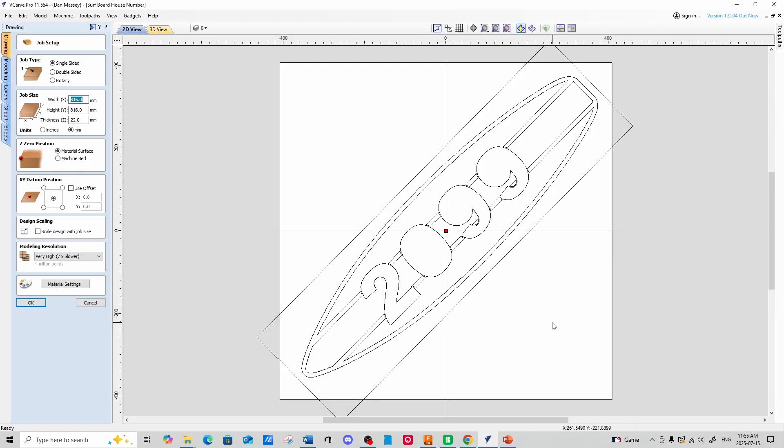Now my cutting surface for the CNC, this is the Onefinity CNC. For me, it's the Woodworker original. It has a max of 816 by 816. So I put that in here to get the white area. And just for fun, I just put in how thick my stock is, 22. But that doesn't matter for the laser.